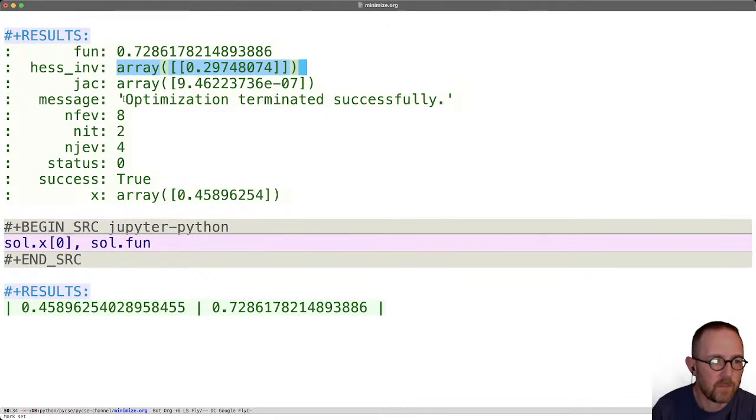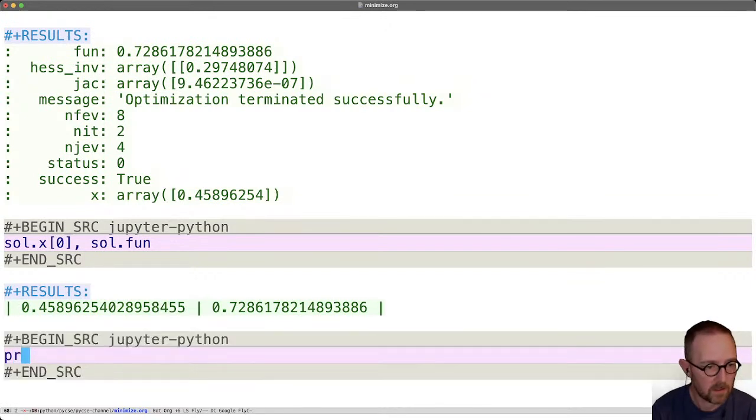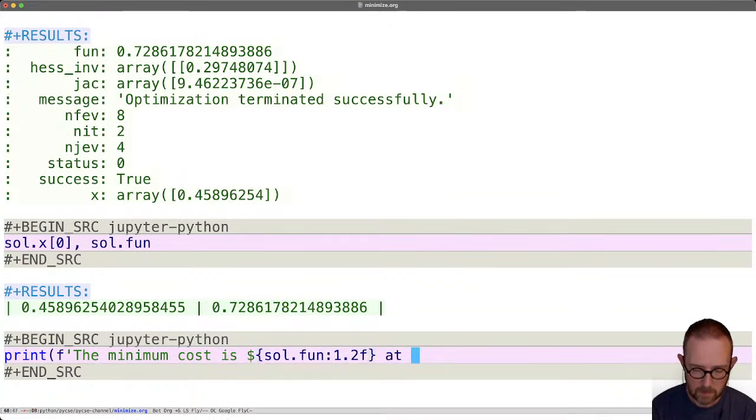And maybe most importantly, the optimization terminated successfully. So let's see, let's just do one last thing to use some fancy formatting. The minimum cost is sol.fun and let's put two decimal places and let's assume this is a cost in dollars at an x value of.